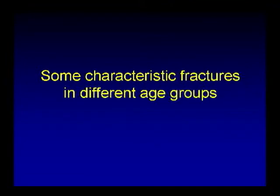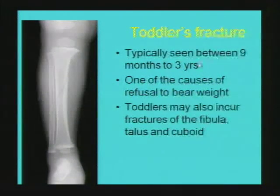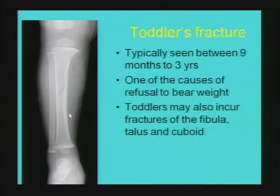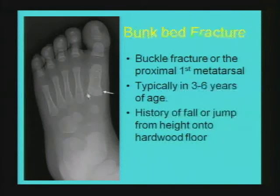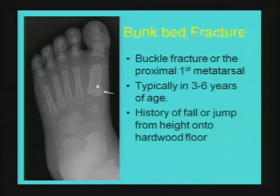Some characteristic fractures in specific age groups: a toddler's fracture is typically seen from 9 months to 3 years, can involve the fibula, talus, and cuboid, with classical presentation of limp or refusal to bear weight. They are typically spiral fractures through the mid or lower one-third of the tibial diaphysis and may be very subtle. A bunk bed fracture is a buckle fracture of the proximal first metacarpal, typically seen in 3 to 6 years of age, with the classical history of a fall or jump from height onto a hard floor.